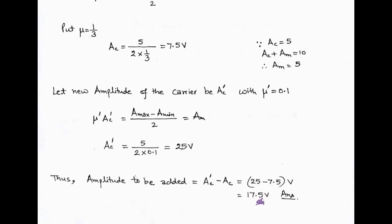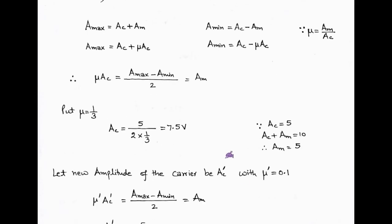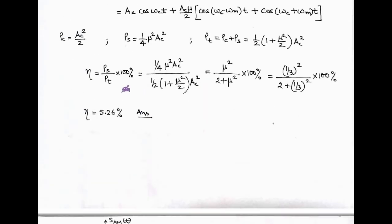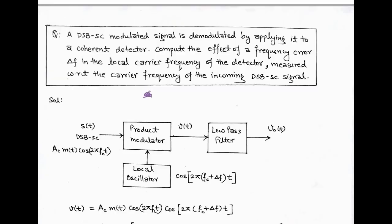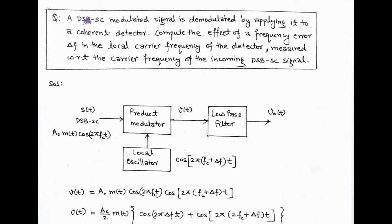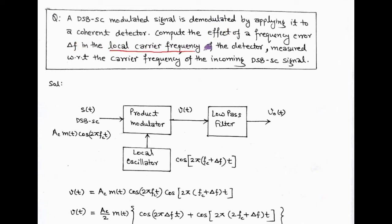These are the two problems related to efficiency in standard AM. Now we look at double sideband suppressed carrier AM. The problem is: a DSB-SC modulated signal is demodulated by applying it to a coherent detector. We have to find the effect of a frequency error delta_f in the local carrier frequency of the detector, measured with respect to the carrier frequency of the incoming DSB-SC signal.